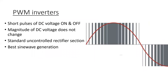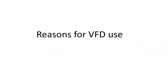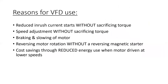PWM inverters use short pulses of DC voltage on and off. The magnitude of DC voltage does not change. It uses a standard uncontrolled rectifier section and provides the best sine wave generation. There are a number of reasons to use VFDs beyond just basic speed control: we can reduce inrush current on starting without substantially sacrificing torque, do speed adjustment without sacrificing torque, perform braking and slowing, reverse motor rotation without a reversing magnetic starter, and achieve significant cost savings from reduced energy use at lower speeds.